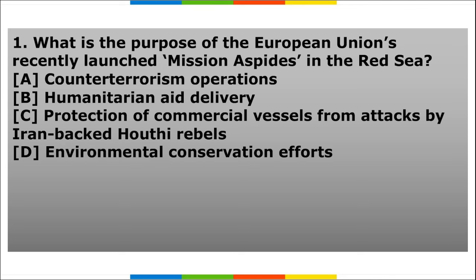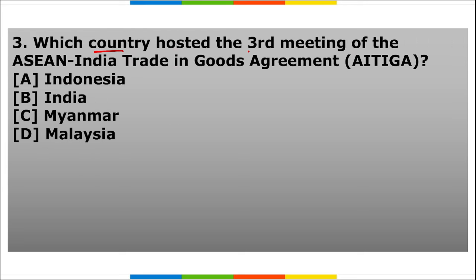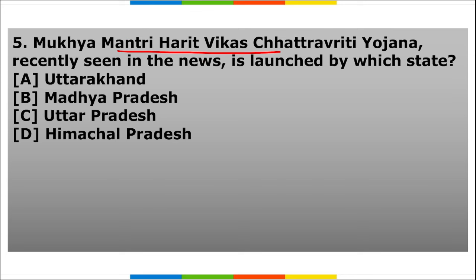Homework questions: First, what is the purpose of the European Union's recently launched mission ASPIDES in the Red Sea? Second, which state secured 740 crore rupees under the Pradhan Mantri Uchchatar Shiksha Abhiyan scheme? Third, which country hosted the third meeting of the ASEAN-India Trade in Goods Agreement? Fourth, what are quasars? Fifth, Mukhya Mantri Harit Vikas Chatra Vritti Yojana was recently in the news — which state launched it?